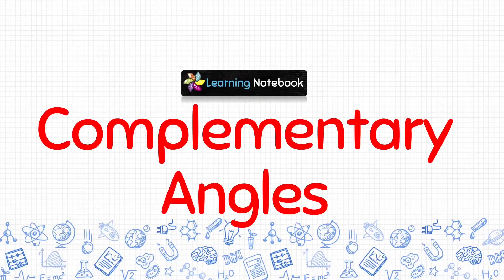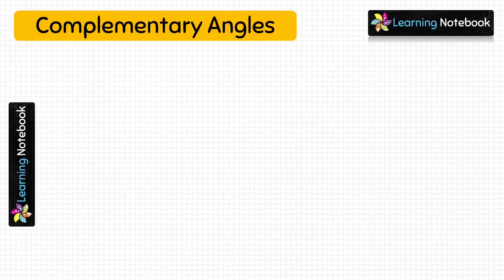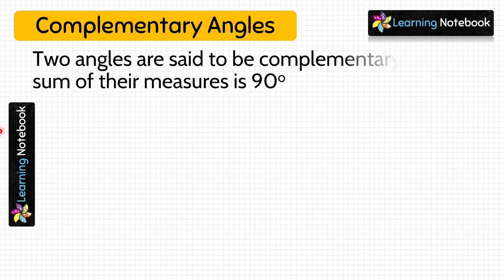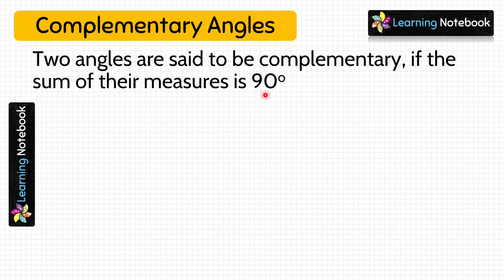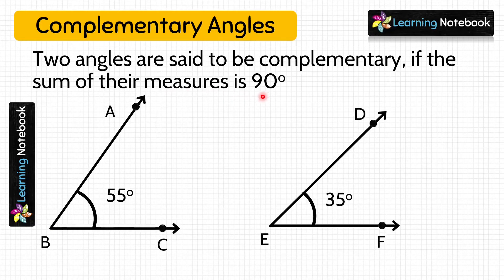So let's start and first understand what are Complementary Angles. Two angles are said to be Complementary if the sum of their measures is 90 degrees. For this, let's consider two angles: Angle ABC, which measures 55 degrees, and Angle DEF, which measures 35 degrees.